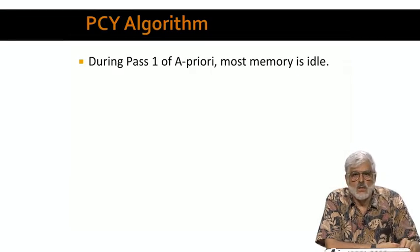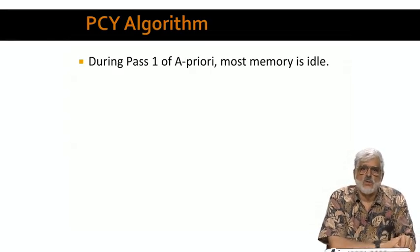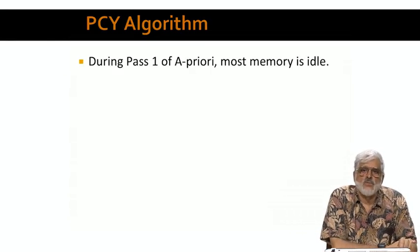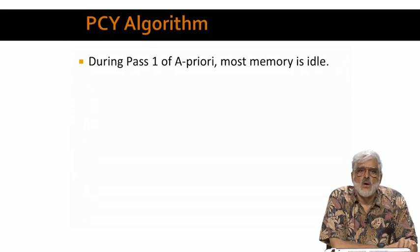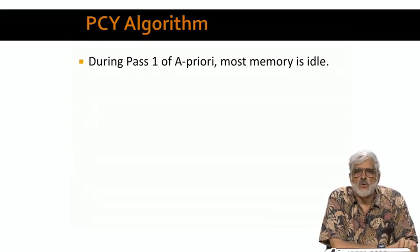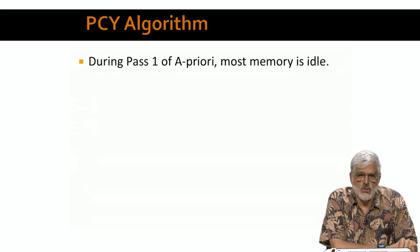The essence of the PCY algorithm is to take advantage of the fact that if the set of items is modest in size, we have lots of space during the first pass that we don't seem to need. We can, in fact, do some counting that will give us a smaller candidate set of pairs. That will help us on the second pass, where main memory is often the critical resource, since we don't have to store as many counts.